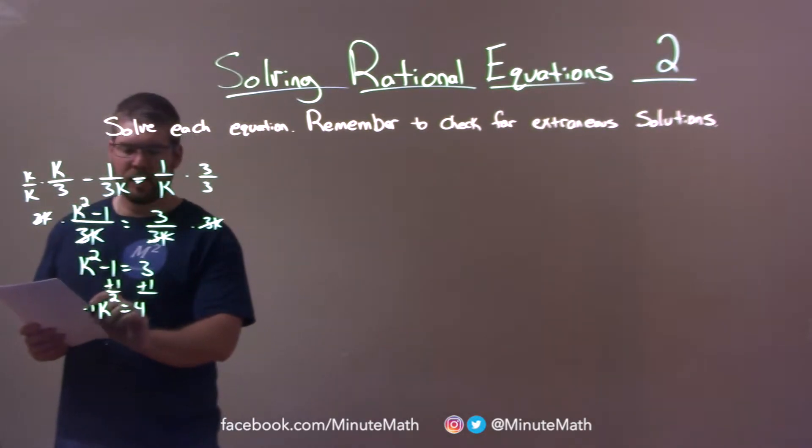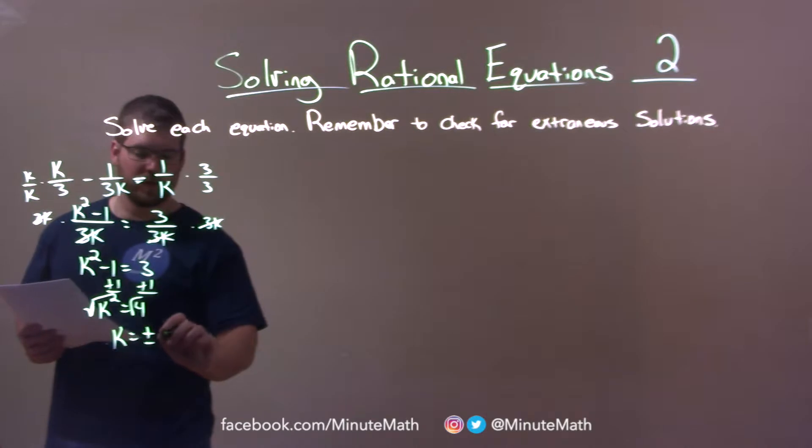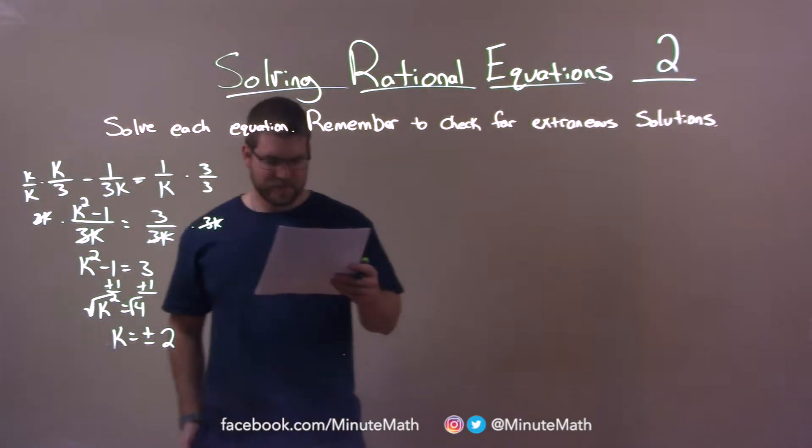Square root both sides. Remember, that's the opposite of squaring. And we have k equals plus or minus square root of 4, which is 2. Don't forget your plus and minus.